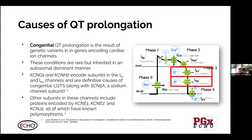SCN5A is a sodium channel subunit also associated with long QT syndrome. A number of other subunits — KCNE1, KCNE2, KCNJ2 — are known to be polymorphic, although none of them, at least to date, have risen to the level of being a definitive cause for congenital long QT syndrome.